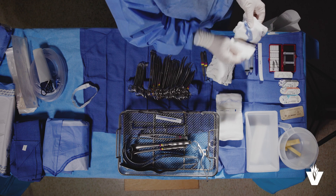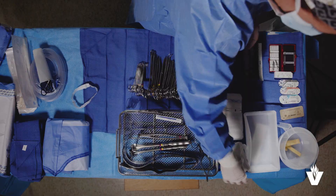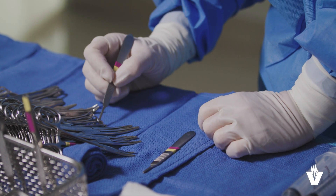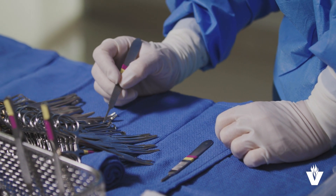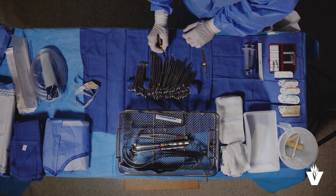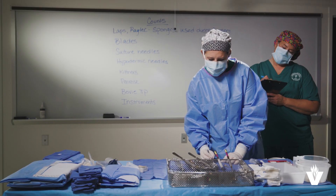Let's take a look at an equipment counting procedure. The initial count is done before a skin incision is made. Separate the items as you count. You will state the name of the item to be counted, then count how many you have and write it down. Verify with the circulator how many of each item was counted.